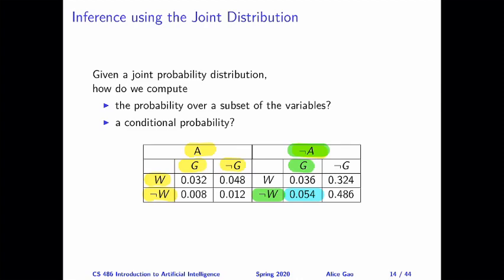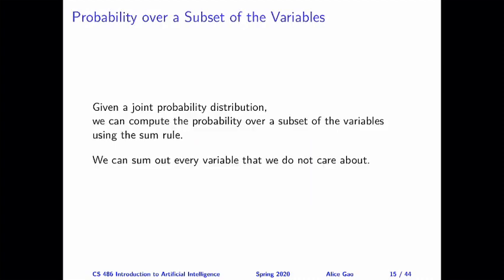Given this joint distribution, let's think about two tasks that we can do. The first task is how do we calculate the probability over a subset of the variables? And the second task is how do we calculate a conditional probability — the probability of one variable given that we know the value of another variable. Let's think about the first task first.